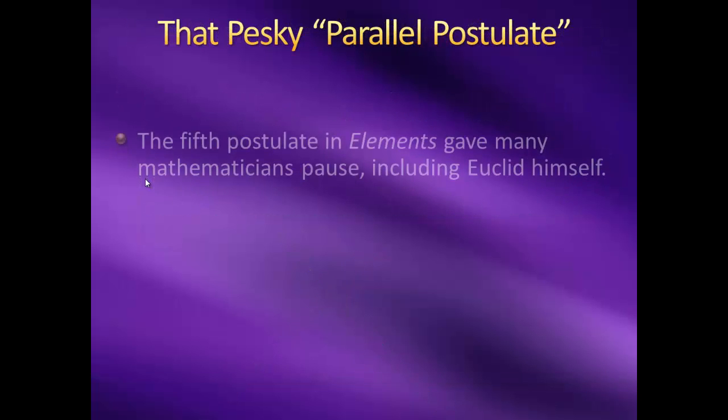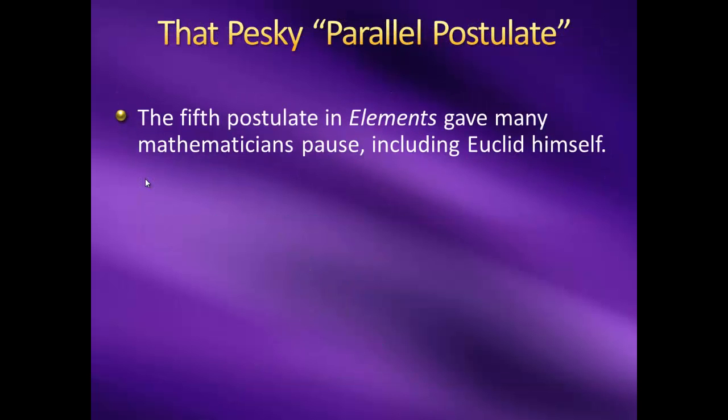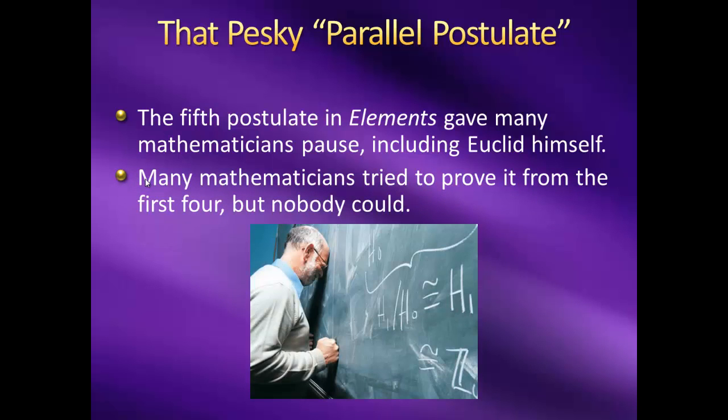Well, this was a problem for Euclid, who put off using it for as long as he could, proving everything he could using only the first four axioms, until he was forced to use it in Proposition 29 in Elements. For many years afterward, countless mathematicians tried to use Euclid's first four axioms to prove his fifth axiom, which came to be called the Parallel Postulate. But nobody could manage to do it.